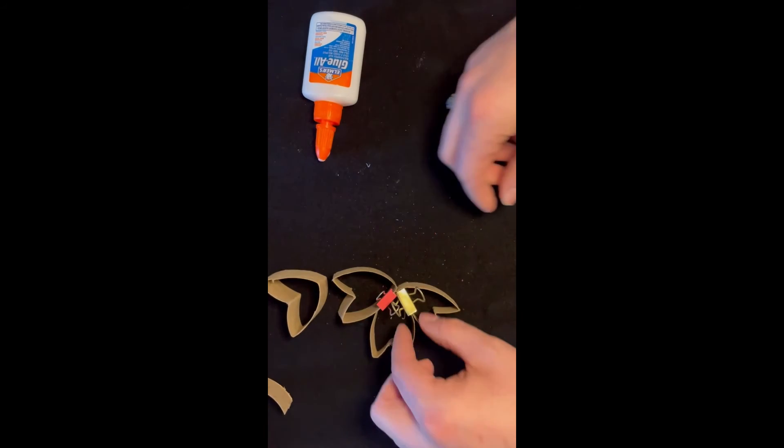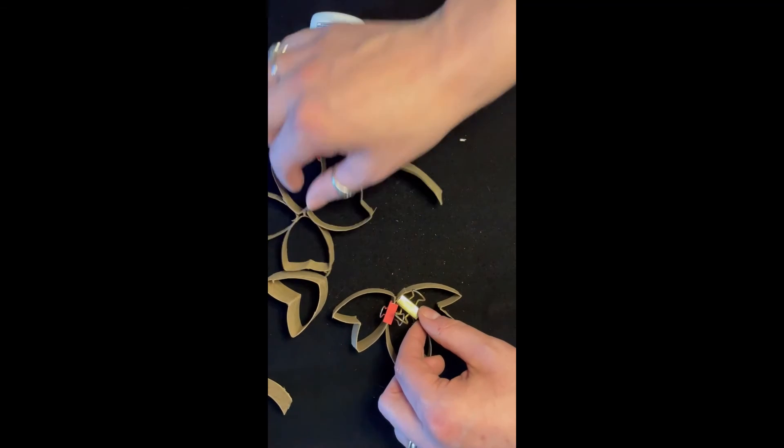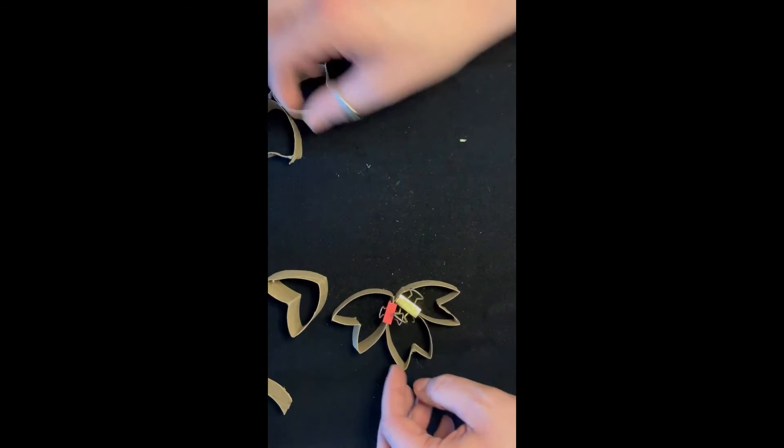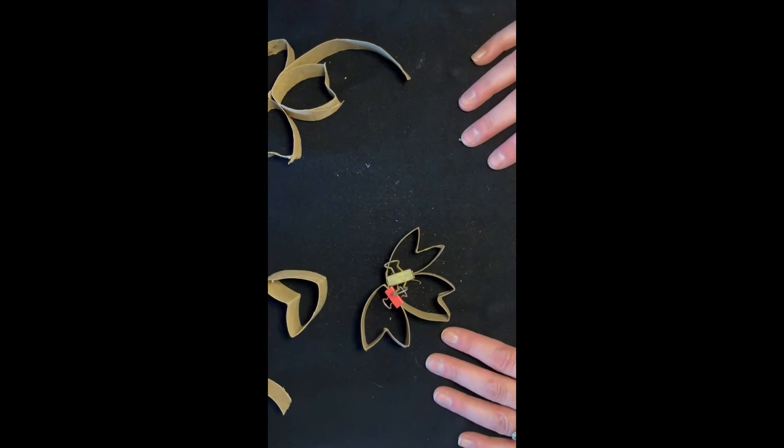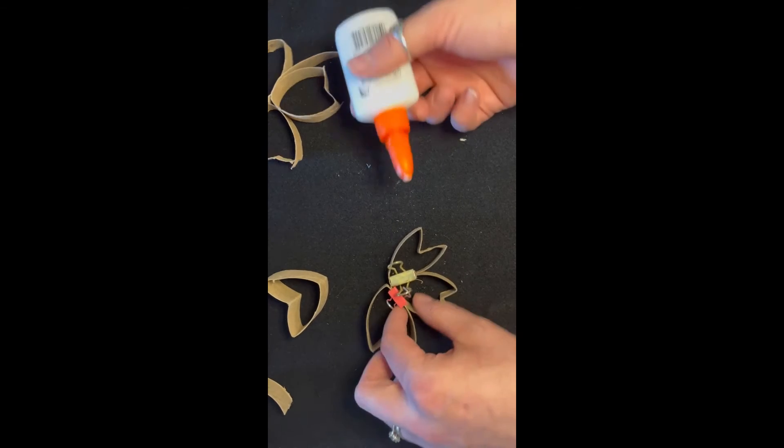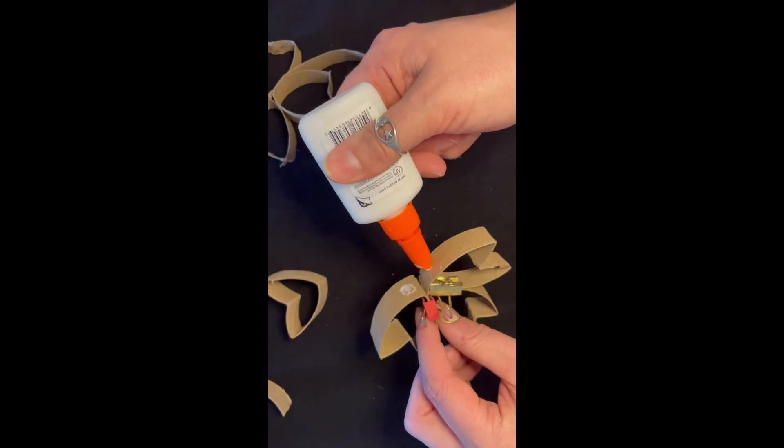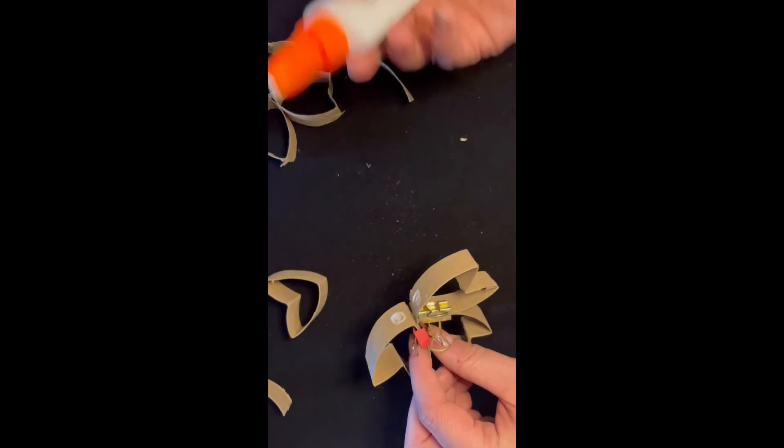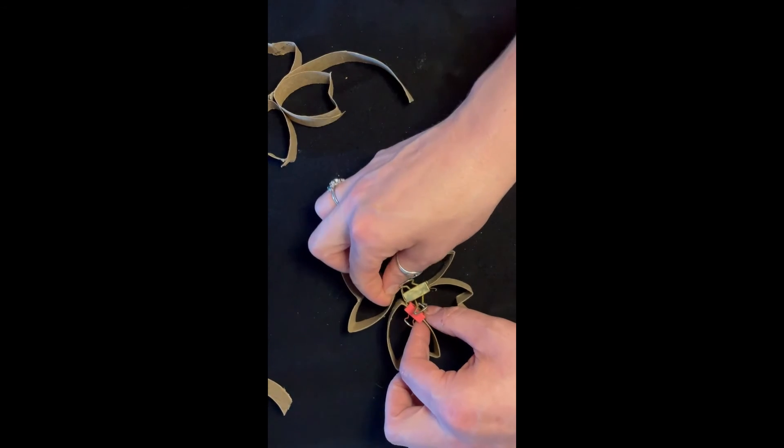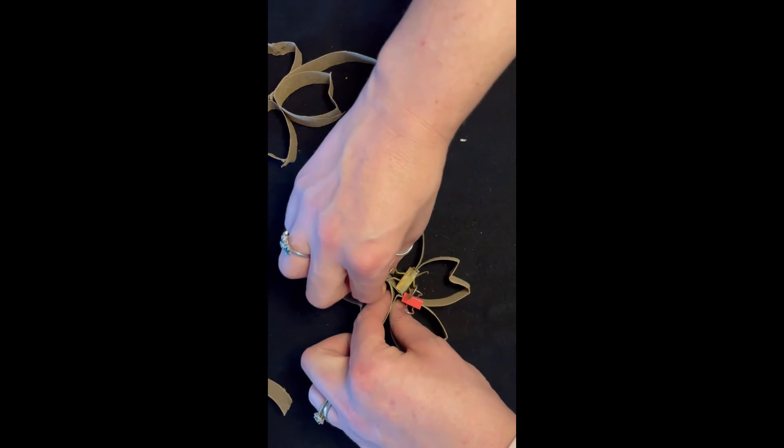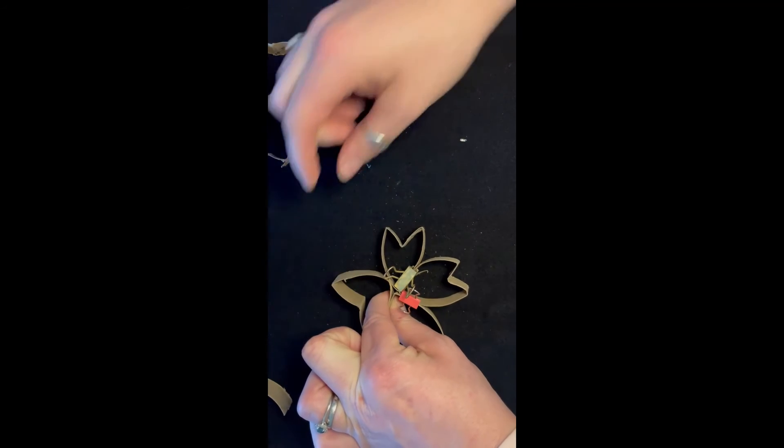If you don't have binder clips, you can just press them together. That's how I did this one. I just pressed it together for a little bit. But since I don't have a lot of hands right now, I'm just going to binder clip it. And now we'll do two more dots and we'll get this guy in here.